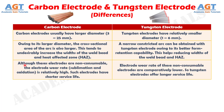No. 9: Although carbon electrodes are non-consumable, the electrode wear rate due to sublimation and oxidation is relatively high. Such electrodes have a shorter service life, whereas the electrode wear rate of tungsten non-consumable electrodes is comparatively lower, so tungsten electrodes have a longer service life.